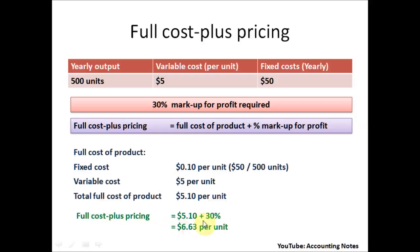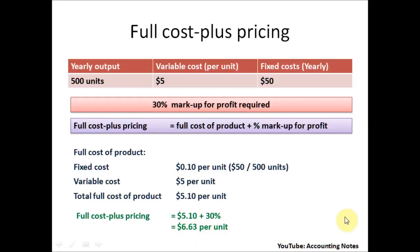The last step is to add the percentage markup for profit to the full cost. The full cost plus pricing equals $5.10 per unit plus the 30% markup, giving a final full cost plus price of $6.63 per unit.